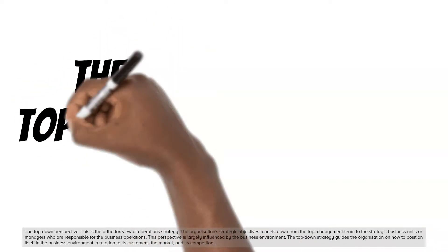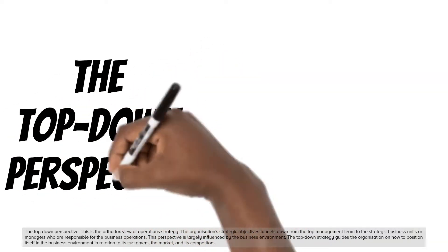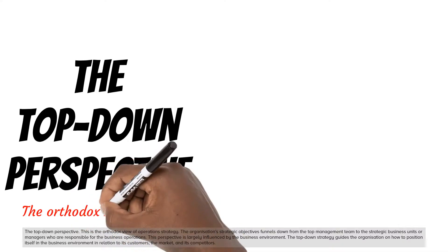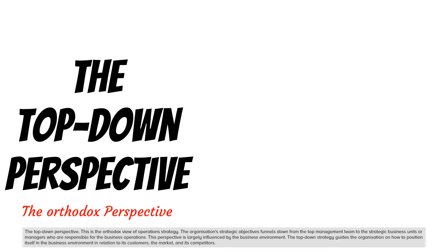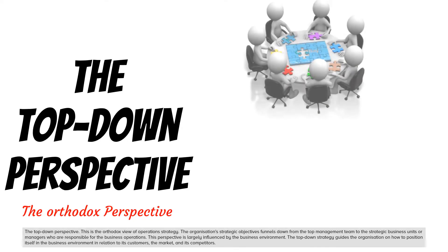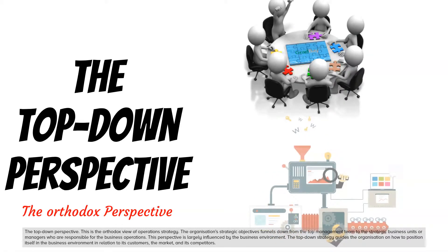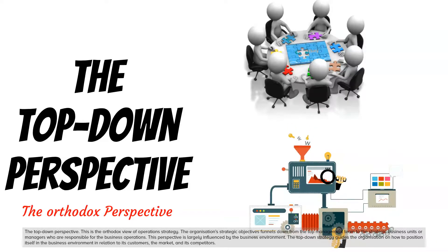The top-down perspective is the orthodox view of operations strategy. The organization's strategic objectives funnel down from the top management team to the strategic business units or managers who are responsible for the business operations. This perspective is largely influenced by the business environment. The top-down strategy guides the organization on how to position itself in the business environment in relation to its customers, the market, and its competitors.